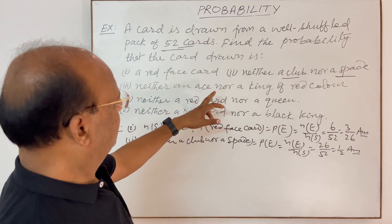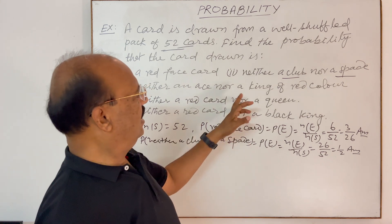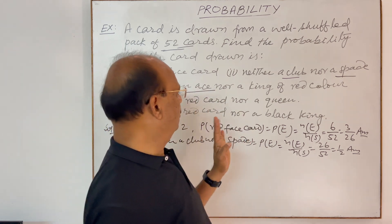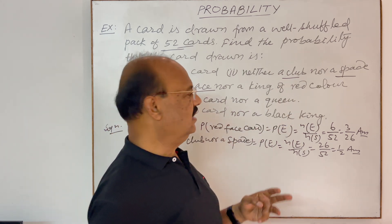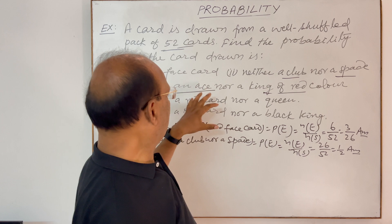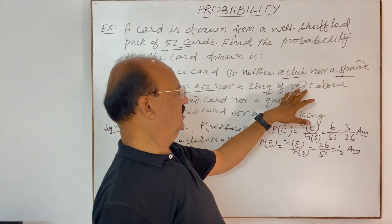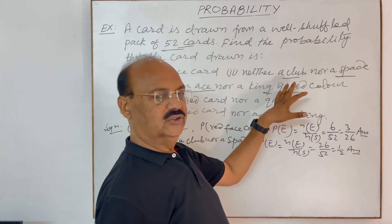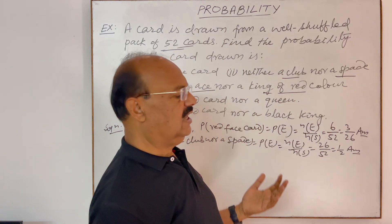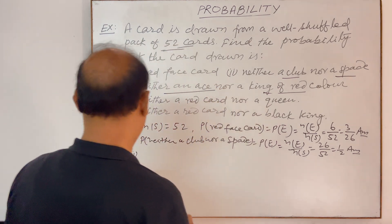Now the third part: neither an ace nor a king of red color. There are four aces, one in every suit. Similarly there are four kings. Neither an ace means the total four aces should not be there. For a king of red color, from red suits there are two kings — one from hearts and one from diamond. So we exclude four aces and two red kings: four plus two equals six cards not desired. Remaining are 52 minus 6 equals 46 cards.